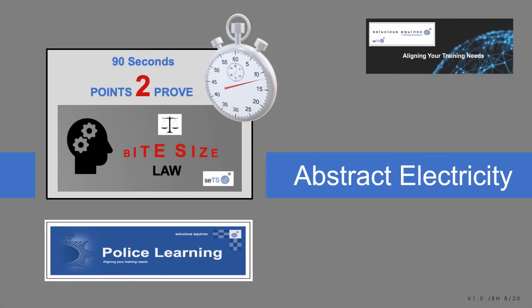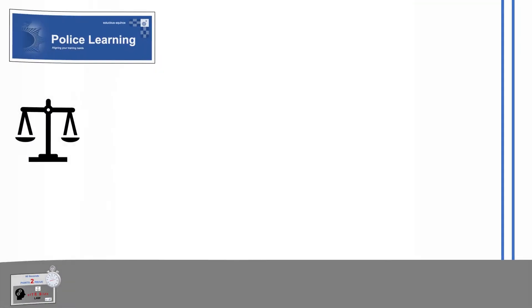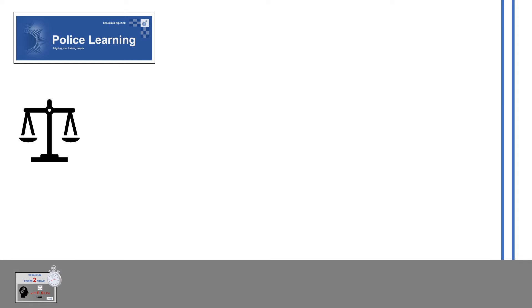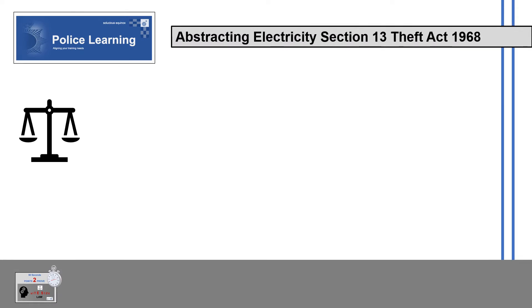Welcome to your 90 seconds points to prove for the offence of Abstracting Electricity, brought to you by Seleucus Equinox for police learning. Abstracting Electricity — Section 13 Theft Act 1968.